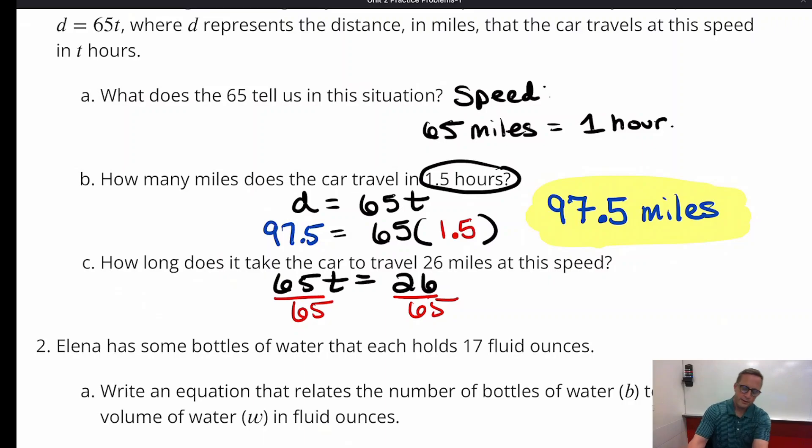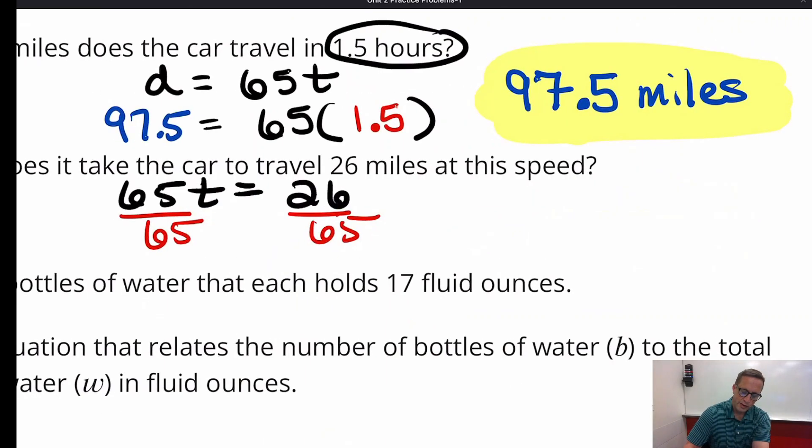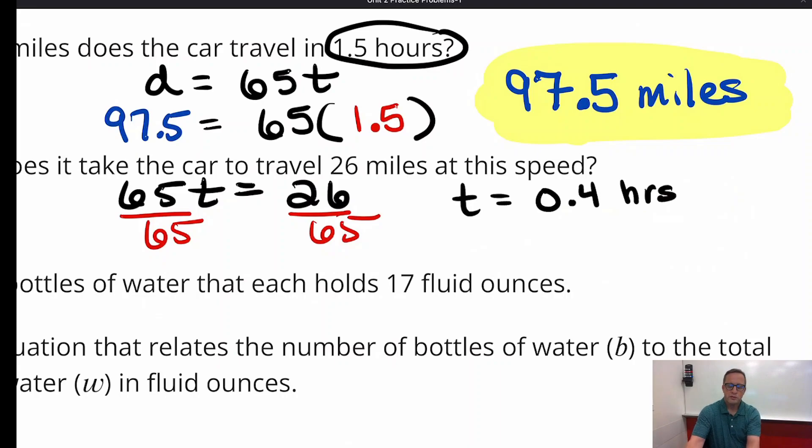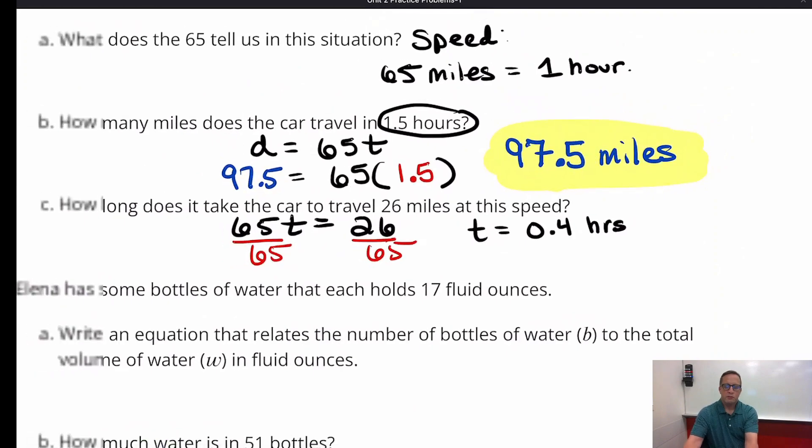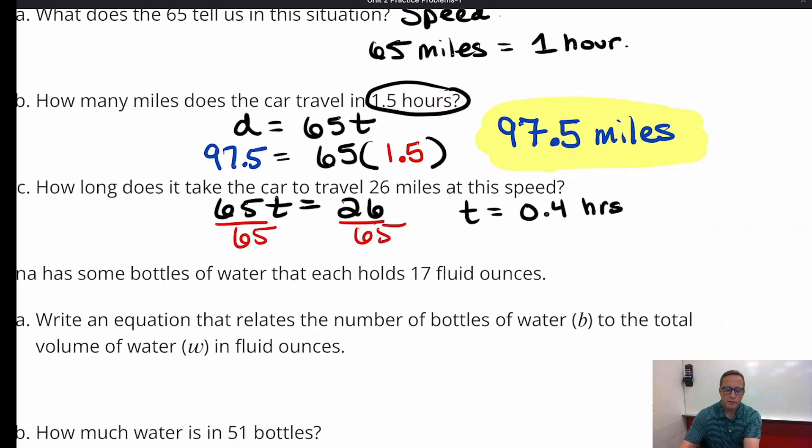So how long does it take the car to travel 26 miles? We're going to divide by 65. So we're going to do 26 divided by 65. And you get, when I do this, I get T equals 0.4. So 0.4 hours. 4 tenths of an hour. Which is not 4 minutes. It's not 40 minutes either. If you want to turn that into minutes, just multiply that by how many minutes are in an hour, 60.